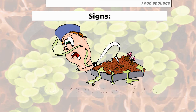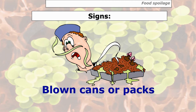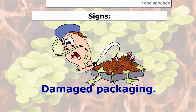Further signs include texture change, where food becomes more spongy as yeasts or spoilage bacteria create pockets of gas, unusual taste, and gas production — typically hydrogen or carbon dioxide — causing blown cans or packs. An example would be a bag of box wine that looks like a football due to carbon dioxide build-up from yeasts not destroyed by sulphides. Damaged packaging is another sign.